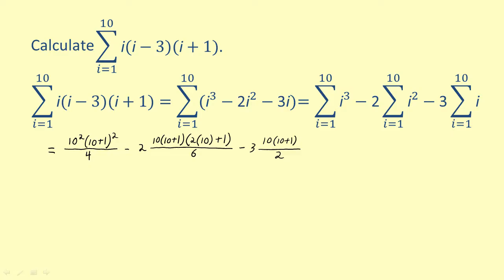Simplifying each of these terms, we get 3,025 minus 770 minus 165. Finally, subtracting, we get 2,090. So the sum of the given polynomial from i equals 1 to 10 is equal to 2,090.